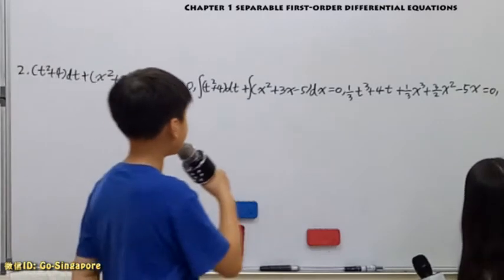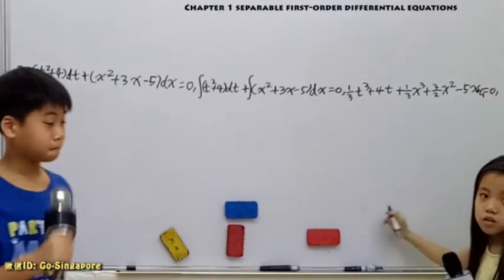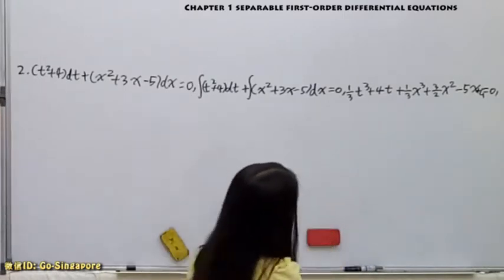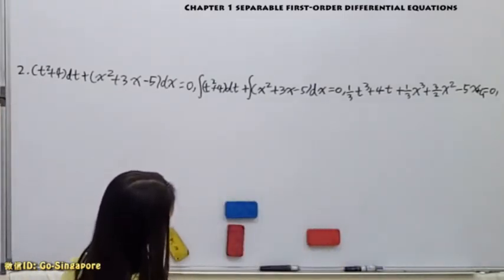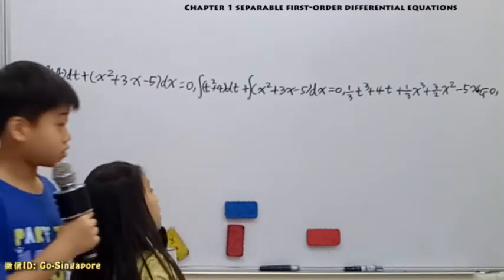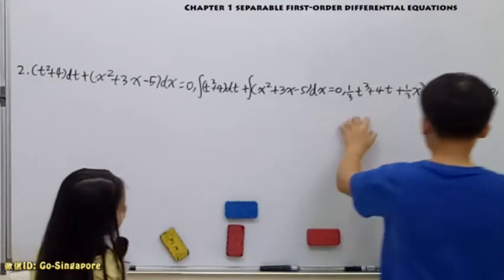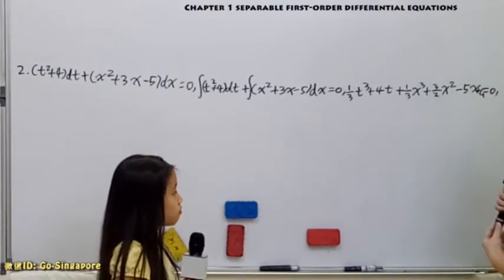Wait, so for this part, let me check. Oh yeah, the plus C. For that part, it actually can be the answer, because this part is actually in the implicit form, right?